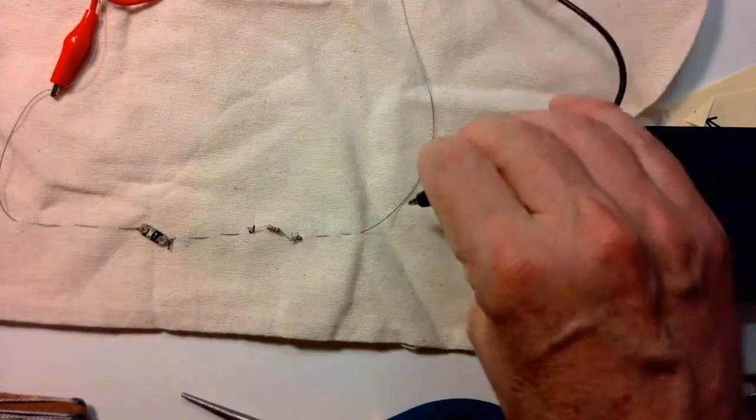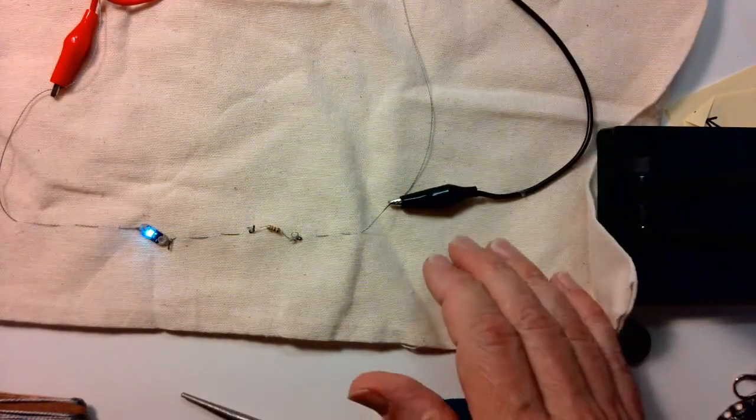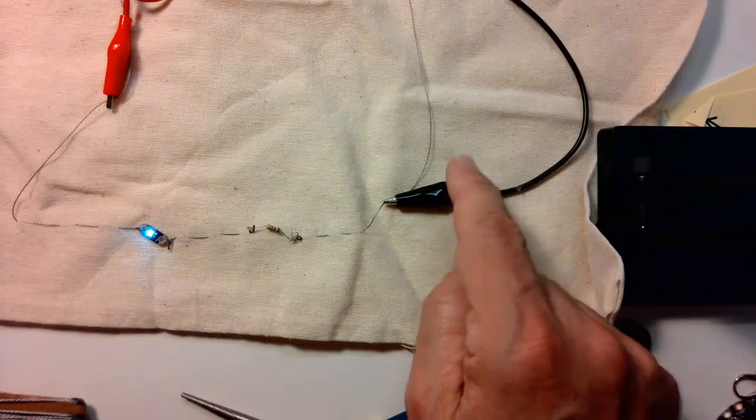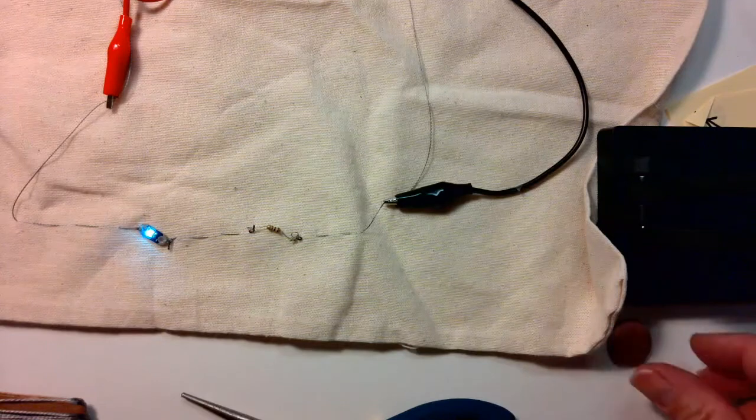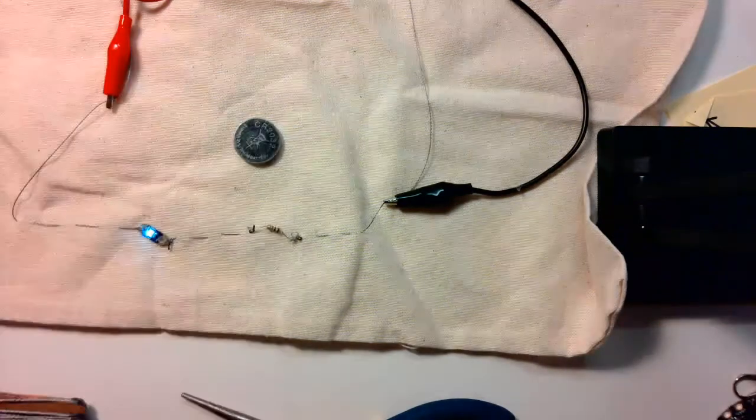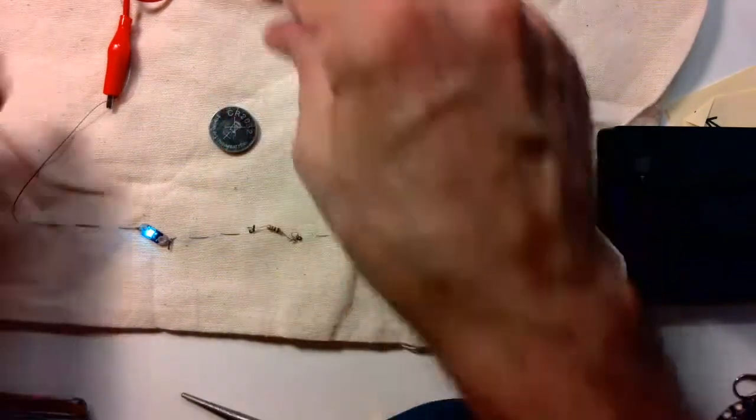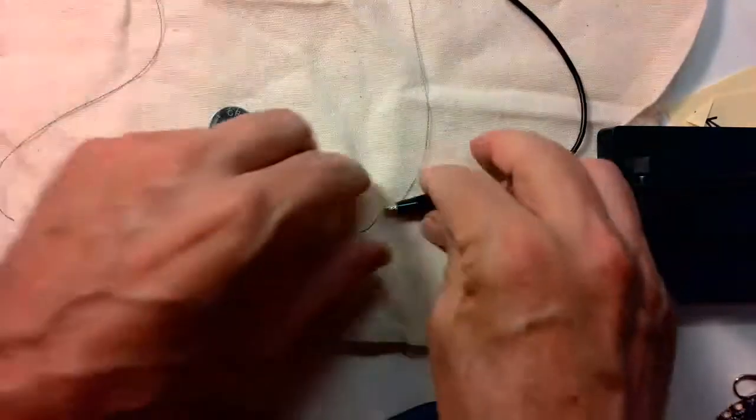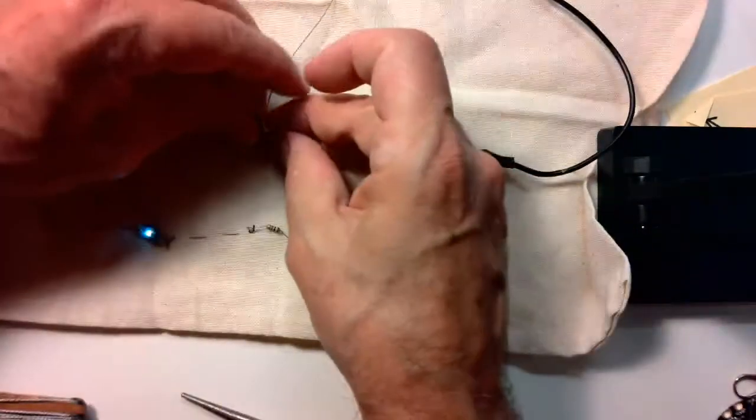When you're developing your conductive fabric circuit, your soft circuit, these two wires are connected to an Arduino which is my power source running 3.3 volts. That's what you want to do because your final piece might run on a watch battery, but as you're developing you don't want to use a watch battery because you'll go through so many batteries you'll run out of money by the end of the project.